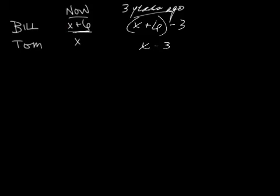Alright, so that's what we have 3 years ago. So instead of writing x plus 6 minus 3, let's change that to x plus 3. So 3 years ago, that's how old they were. What else does it say? 3 years ago, Bill's age was 4 times Tom's age.